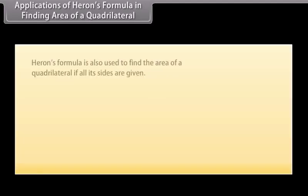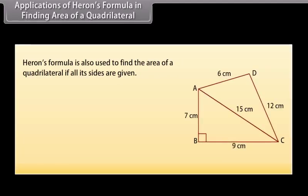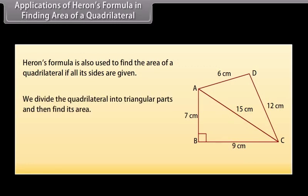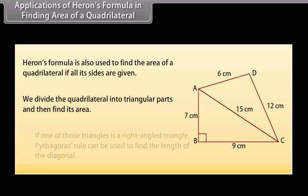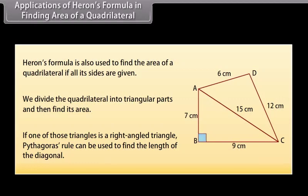Heron's formula is also used to find the area of a quadrilateral if all its sides are given. For that, we divide the quadrilateral into triangular parts and then find its area. If one of those triangles is a right-angled triangle, Pythagoras' rule can be used to find the length of the diagonal. Let us go through some examples.